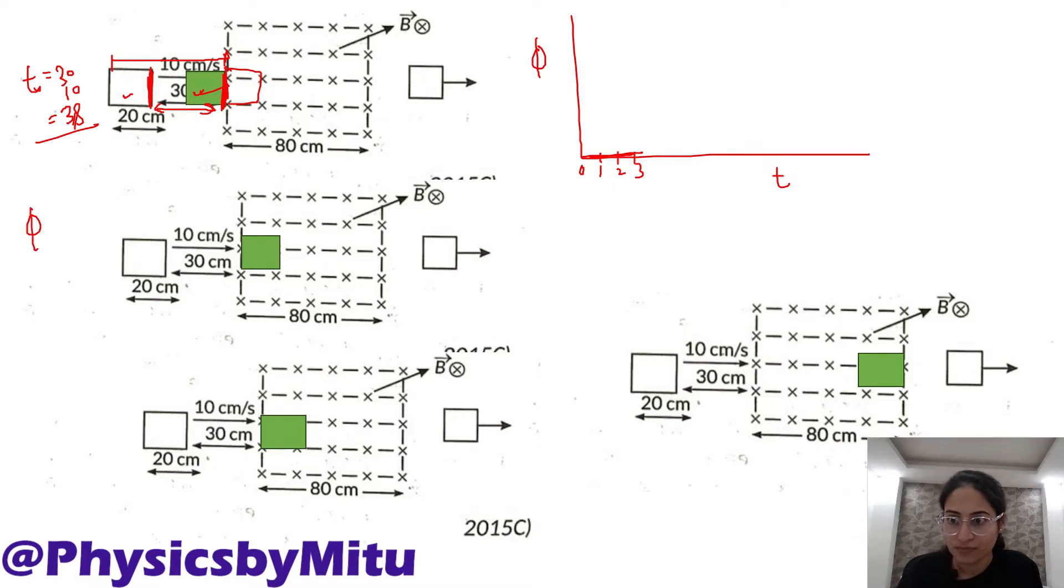Itne interval ke liye flux link hoga. What is the value of that flux? Flux is BA cos 0. Angle between magnetic field vector which is into the screen and area vector will be 0. Magnetic field is given 0.1 tesla. Area of the coil will be 20 cm into 20 cm upon 100 upon 100 to convert into meter. So your answer will be 0.004 Weber. This is the flux.